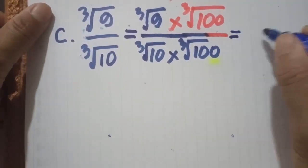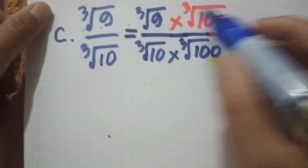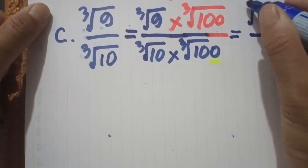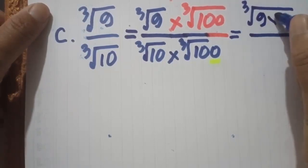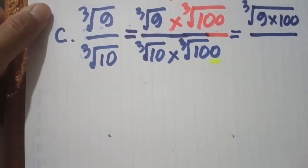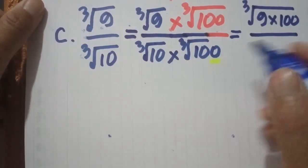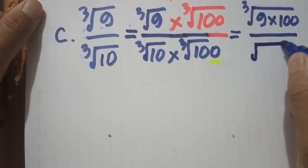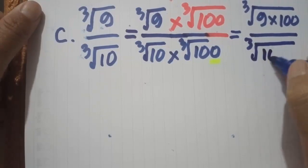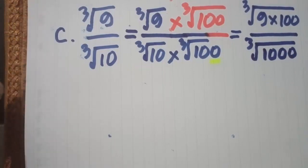Equal — just like this. When the same radical 3, you can add inside radical 3, 9 and 100. When the same radical, we can mix together inside.